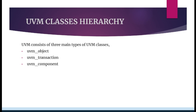Hi everyone, welcome back to UVM series. In today's session we are going to talk about UVM classes hierarchy. Basically, UVM consists of three main types of classes which are UVM object, UVM transaction, and UVM component.